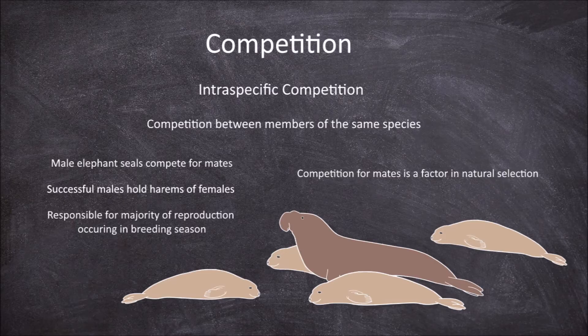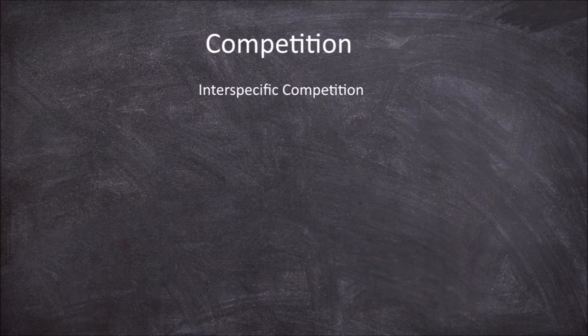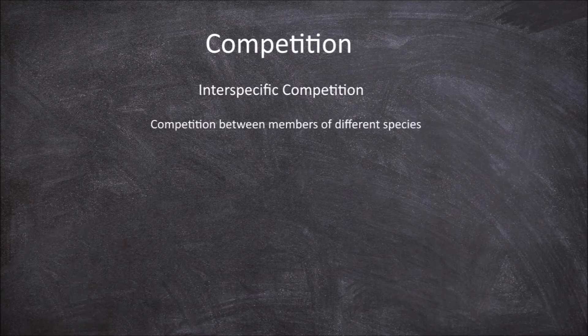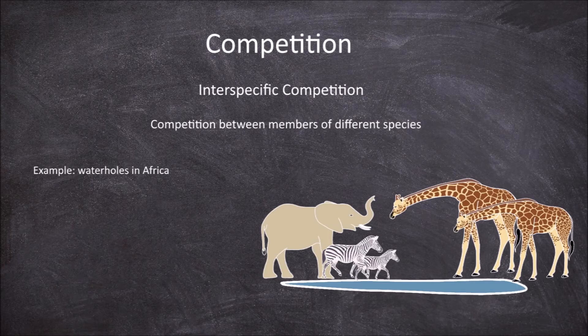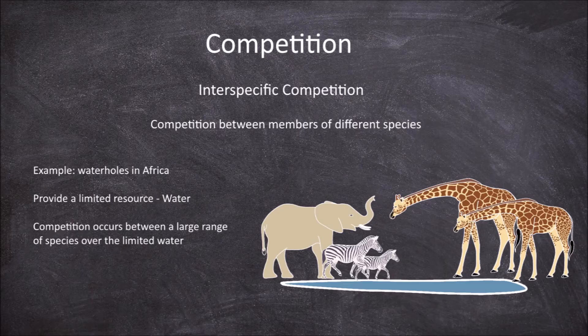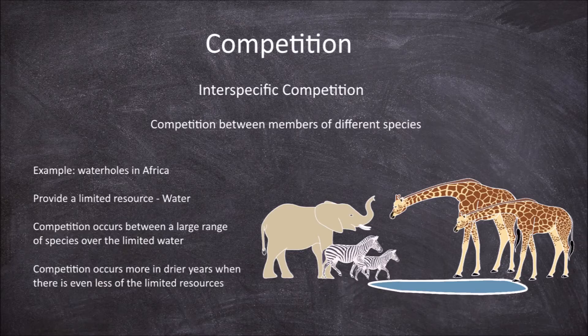The second type of competition is interspecific competition — competition between members of different species. An example of interspecific competition is seen at waterholes in the African desert. These waterholes provide a limited resource of water for numerous species, and competition occurs between the various species using the finite resource of water at these waterholes, especially in drier years when there is even less of the limited resource.